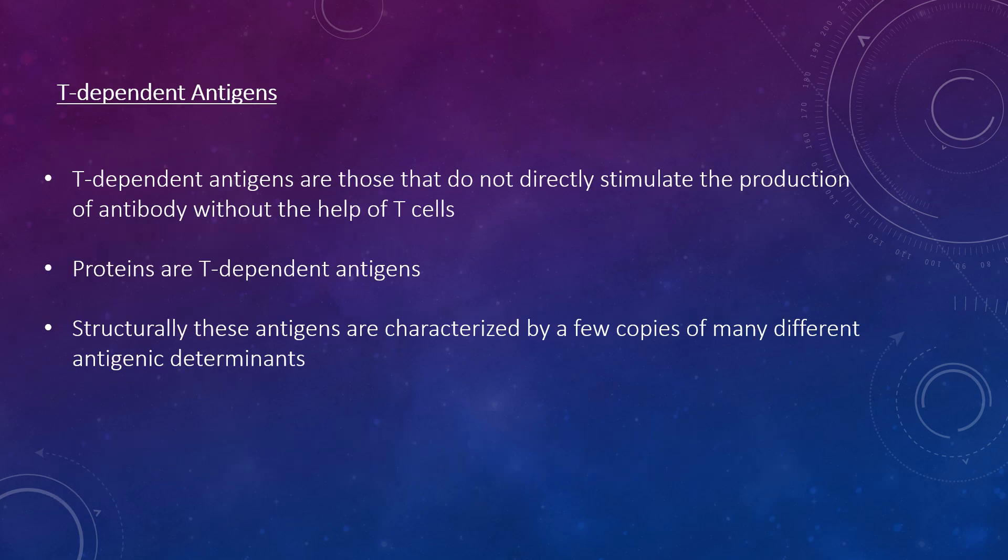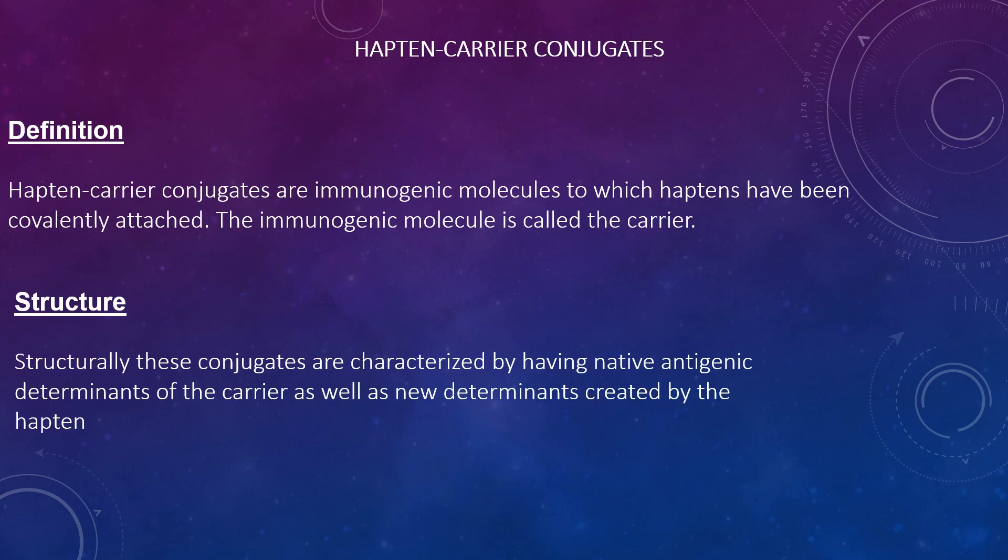T-dependent antigens are those that do not directly stimulate the production of antibodies without the help of T-cells. Proteins are T-dependent antigens, and these antigens are characterised by having a few copies of many different antigenic determinants.